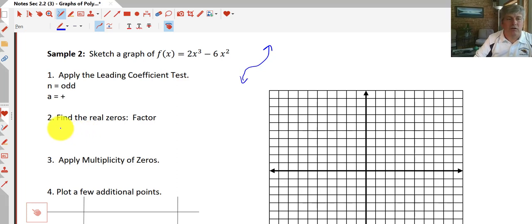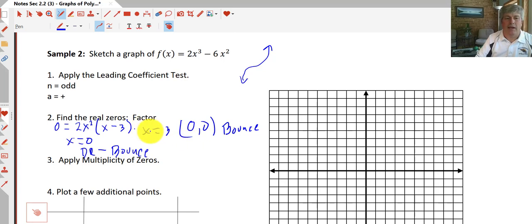We want to find the real zeros of this, so we have to factor. So we set our function equal to 0. It looks like we can factor out a 2x^2, and we're left with x - 3. We've got a double root at x = 0, so our graph is going to bounce at the origin. So the origin, we've got an intercept that will bounce, and we also have an x-intercept at x = 3, and that is going to be a pass-through. So let's go ahead and sketch those points.